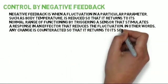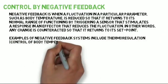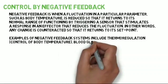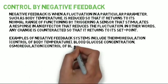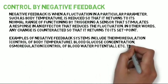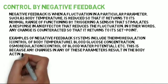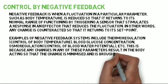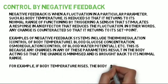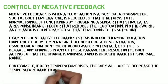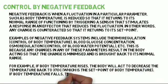Examples of negative feedback systems include thermoregulation — the control of body temperature — blood glucose concentration, osmoregulation, control of blood water potential, etc. This is because any changes in any of these parameters result in the body acting so that the change is minimised and is brought back to its normal range. For example, if body temperature rises, the body will act to decrease the temperature back to 37 degrees centigrade, which is the set point. If body temperature falls, the body will act to increase its temperature back to 37 degrees centigrade.